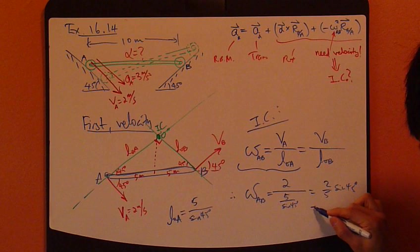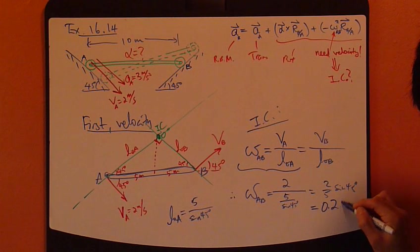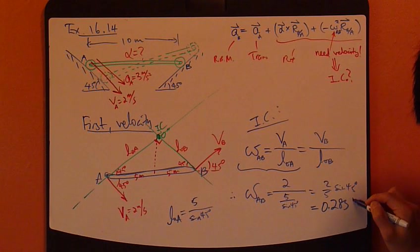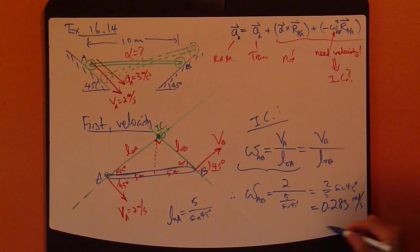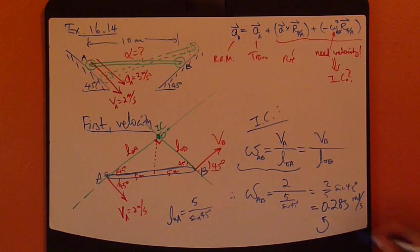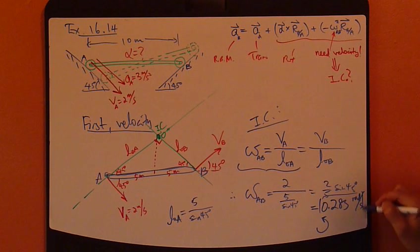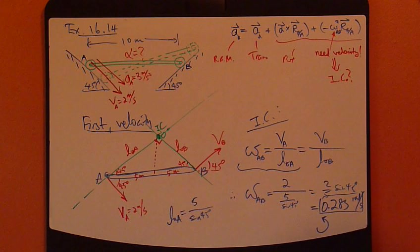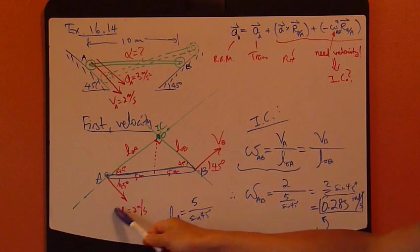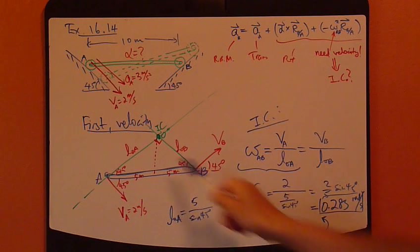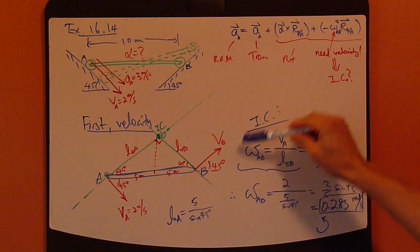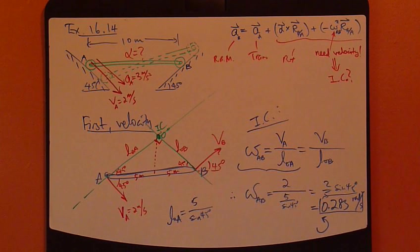So it turns out it's about 0.283 radian per second. It's going counter-clockwise. See how fast it is, the instantaneous center method. Just knowing one velocity, you can find the angular velocity from this relationship.